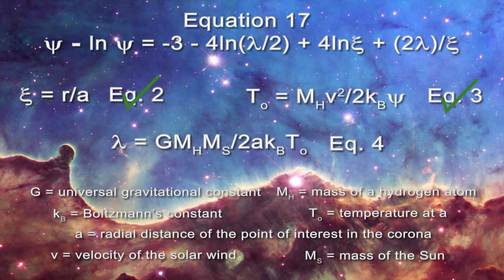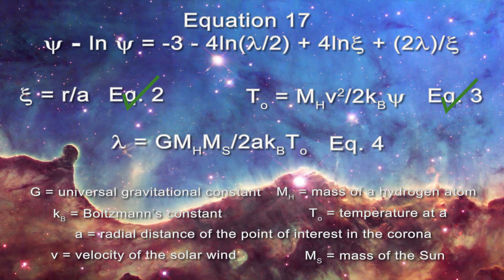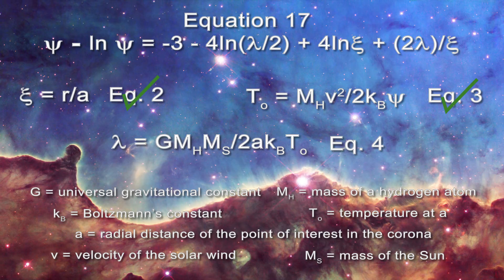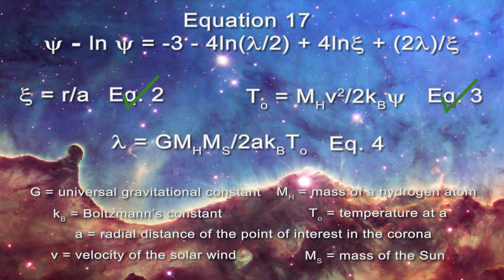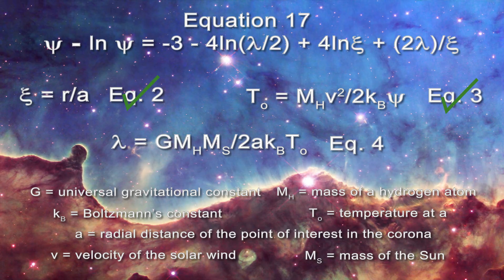You can simply rearrange equation three and see that t sub zero is indeed intensive. That is because it is expressed in terms of a single intensive property, the velocity, along with a dimensionless parameter psi and a group of constants.